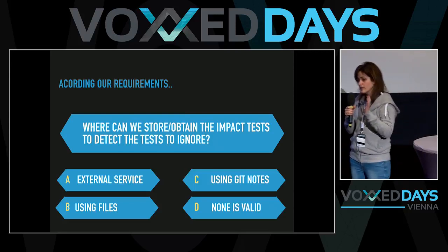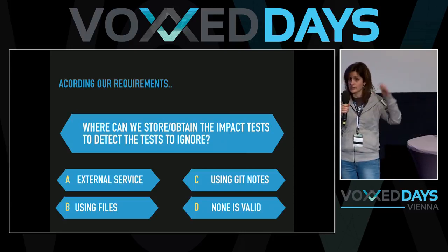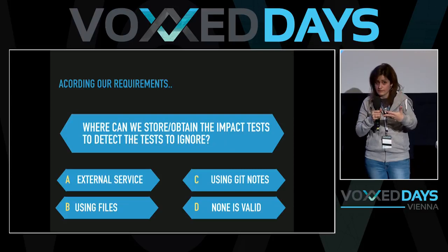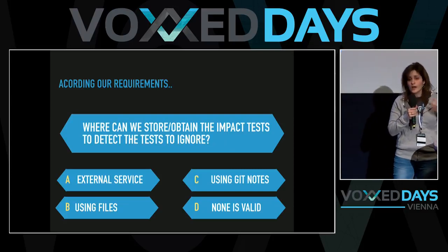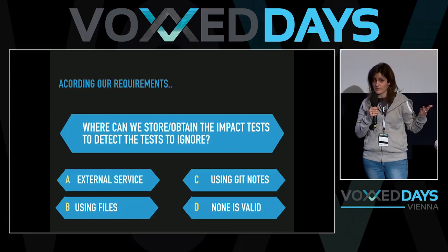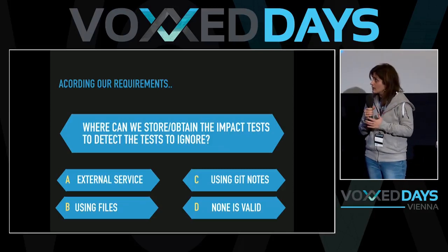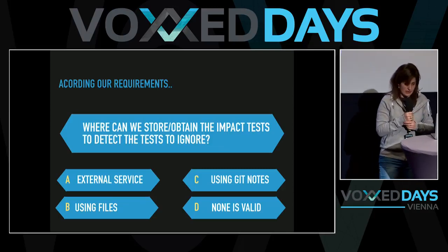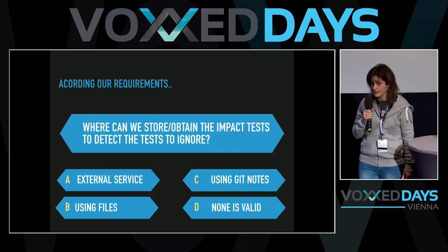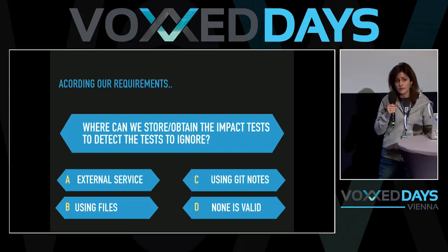We have the test impact report generated from the master branch as a reference, and when we run the tool again, we calculate the delta. Where do we store those reports? Options are: A — an external service; B — using files in the same repo; C — using Git notes; D — any of these. Option A is wrong because one of our requirements is that the solution needs to work offline, and also requires more effort. Option B is not clean because all commits get dirty from these reports.